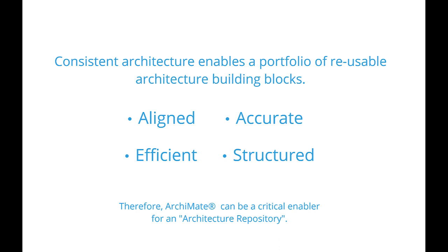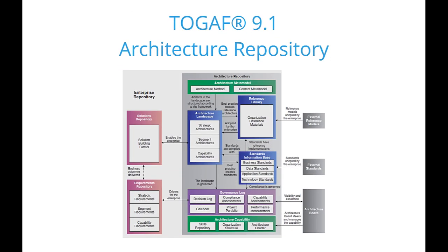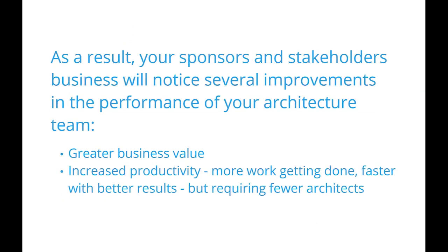We can populate an architecture repository using a consistent architecture metamodel, and that allows us to have an aligned architecture that is more accurate, with our work as a team of architects being more efficient and more structured. We believe Archimate can be a critical enabler for an architecture repository for an architecture team. The business benefit of an architecture repository is that it becomes a tool for answering architecture questions — we no longer have to rely on Visio or our memory. Once we've got that knowledge in a repository, we can reuse it, and that's what makes us more effective.